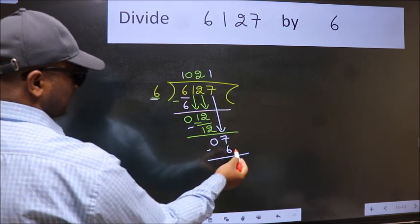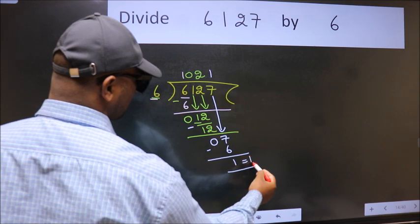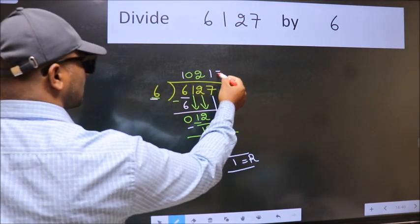No more numbers to bring it down. So we stop here. This is our remainder and this is our quotient.